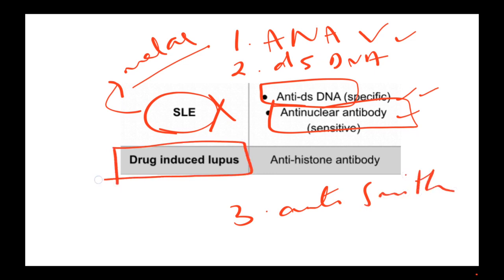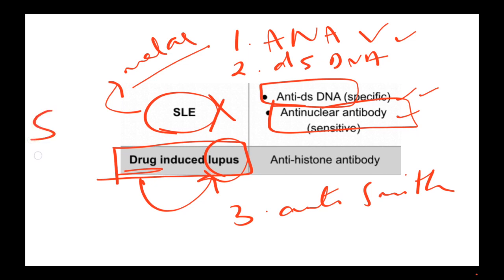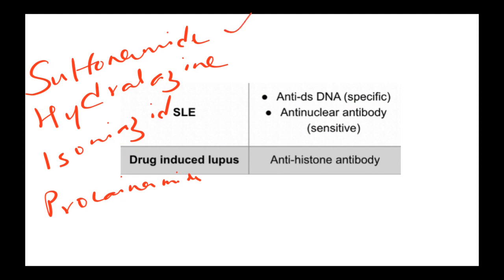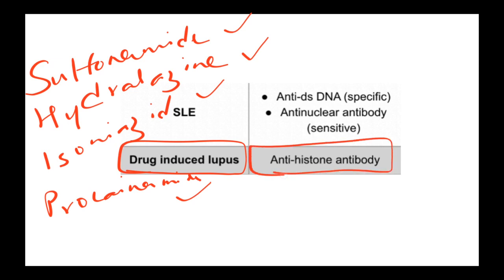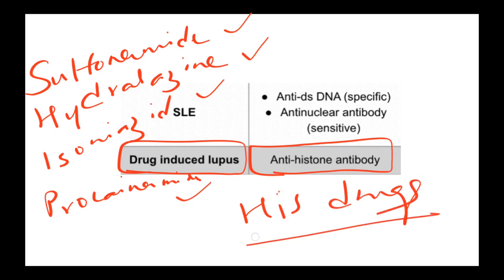The next condition is drug-induced lupus — lupus caused as a side effect of certain drugs. You can remember the drugs with the mnemonic SHIP: S for sulfonamide, H for hydralazine, I for isoniazid, and P for procainamide. The antibodies seen in drug-induced lupus are anti-histone antibodies. You can remember it as 'his drugs causing lupus' — 'his' for anti-histone and 'drugs' for drug-induced lupus.